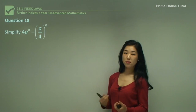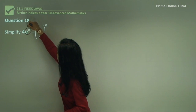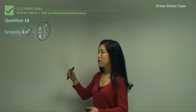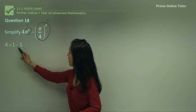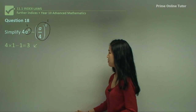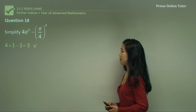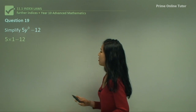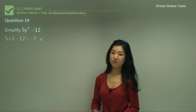Question eighteen. Be careful and make sure you know which ones are going to be 1. This one is going to be 1, and the whole thing 8 over 4 to the power of 0 is also going to be 1. So it's 4 times 1 minus 1, which is simply 3. Question nineteen: y to the power of 0 is 1, so 5 times 1 minus 12 is simply negative 7.